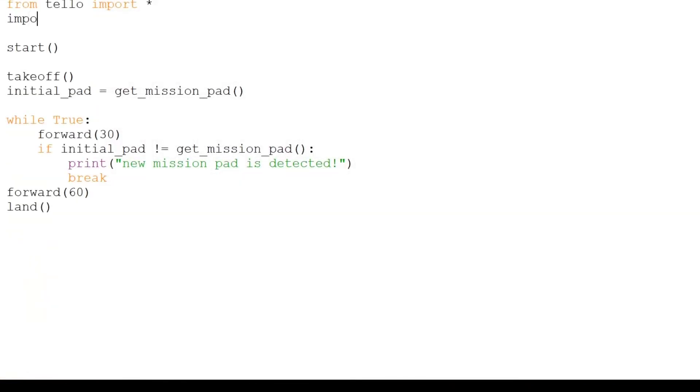We will import the time library at the top of our program. When it sees a new mission pad, instead of breaking, we will move forward 30 centimeters, land and wait one second with time.sleep.